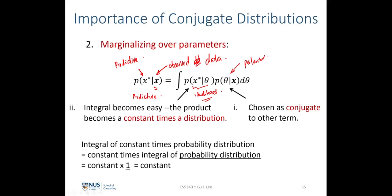Here is a derivation of why the predictive density equals this integral form. We make use of the conditional probability and marginal probability rules learned earlier to rewrite it into this form, and then apply conditional independence to evaluate the final step. This will be covered in more detail in lecture 2.